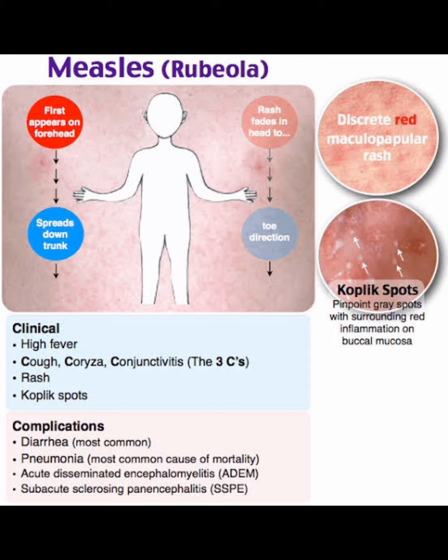Complications of measles include diarrhea, which is the most common complication; pneumonia, which is the most common cause of mortality; acute disseminated encephalomyelitis; and subacute sclerosing panencephalitis (SSPE). This is all about measles. Thank you.